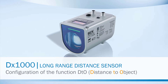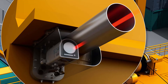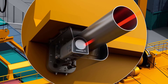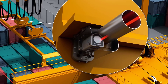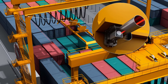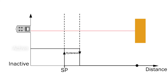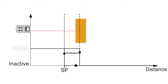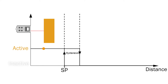Welcome to the tutorial on the configuration of the switching function DTO, short for distance to object, of the TX1000 long-range distance sensor. An example of the switching function DTO is to prevent collision of rail-mounted gantry cranes. When the measured distance falls short of the selected switching point, the switching output changes its state from inactive to active.